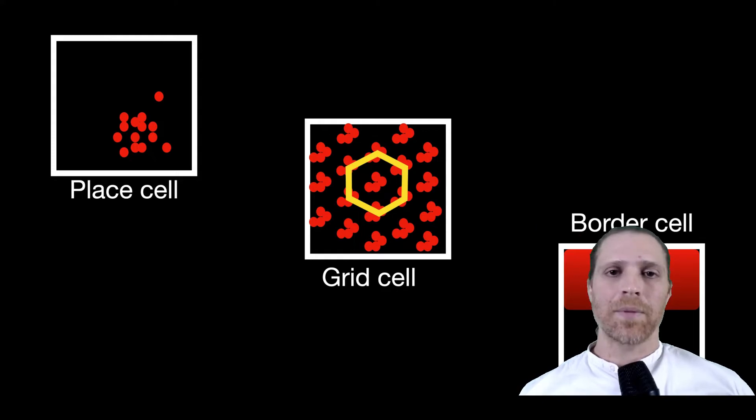Another cell type that was found is a border cell that these cells can fire action potentials at a higher rate when the animal gets close to a border in its environment. However, all these cells and many other cells that I haven't mentioned were found in rodents in an experiment that enables the researchers to pinpoint the exact location and identity of these cells.